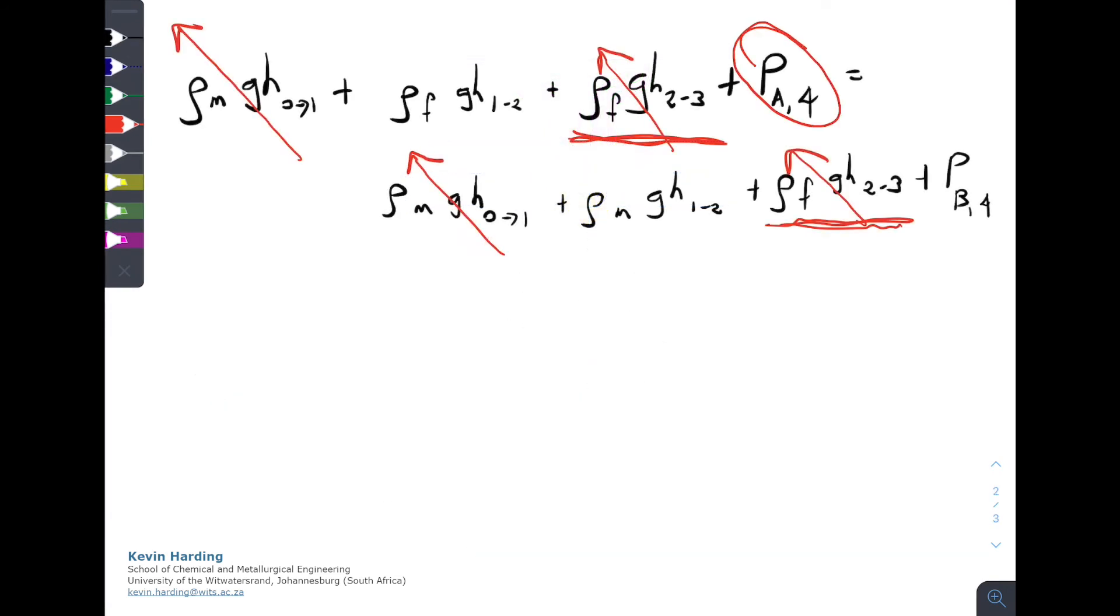We are trying to work out what the difference in pressure is across the pipe. So that is the PA4 term minus the PB4 term, so that's just moving it across to the left-hand side of the equation. And what does that equal to? It's left with ρMGH from 1 to 2, and I'll minus, so that's moving the ρF term from the left-hand side onto the right for 1 to 2.